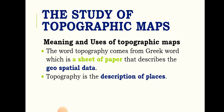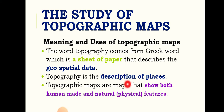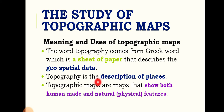Topography is the description of places. Topographic maps are maps that show both human-made and natural physical features.